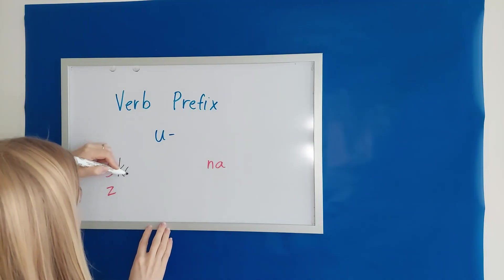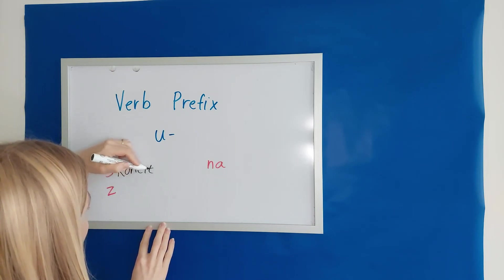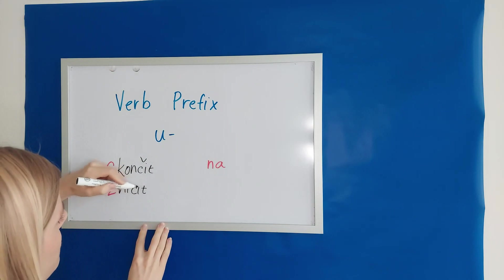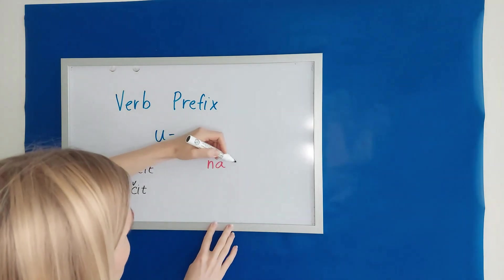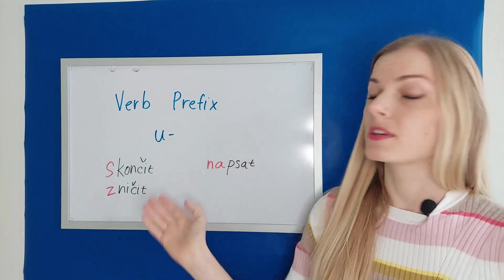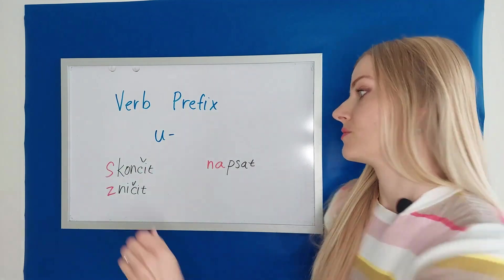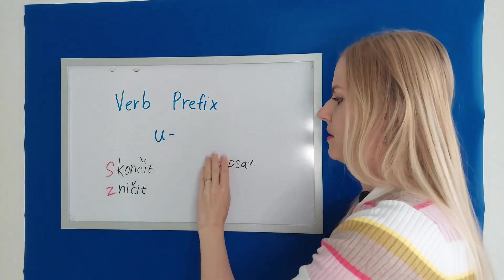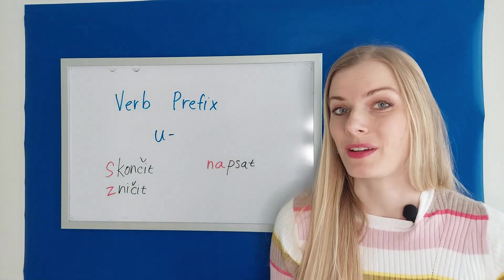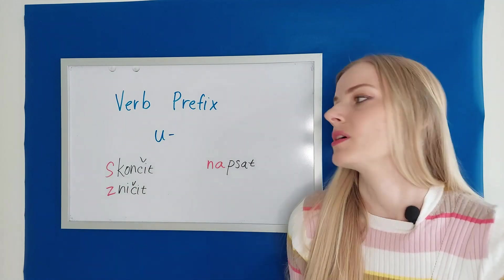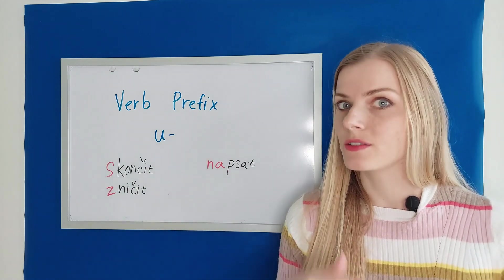S as in skončit for example, to finish. Z as in zničit, to destroy. Na as in napsat, to write. These examples that I wrote would be perfective and if you take away the prefix, the red part, they would be imperfective and they would mean exactly the same thing. Just a finished action.